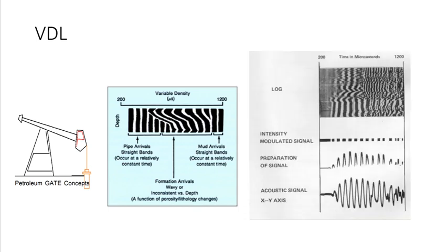If the bonding is poor, the signal will not reach the formation and the parallel lines will be recorded all across the VDL plot.